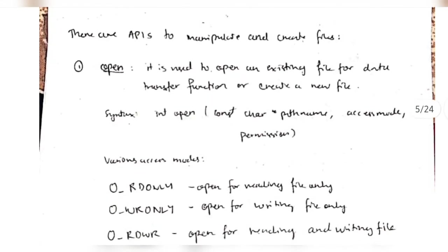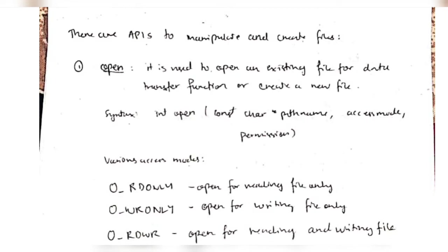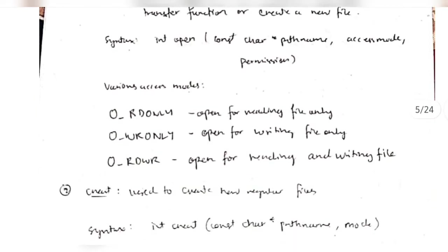There are APIs to manipulate and create files. The name is sufficient for the function - like 'open' is used to open the file. The syntax has the path name, the access mode, and the permission. The various modes are read-only, write-only, and read and write.